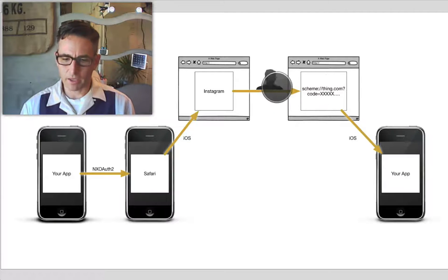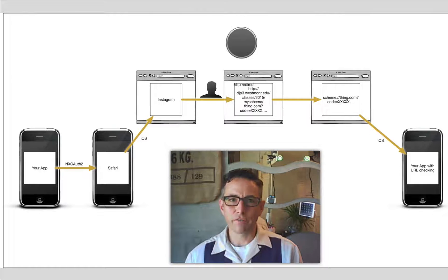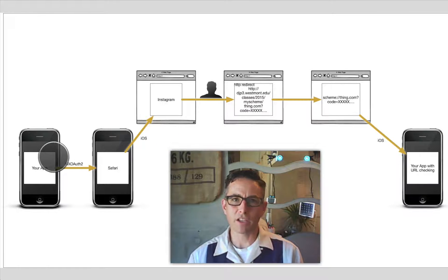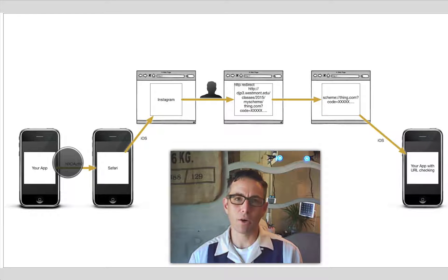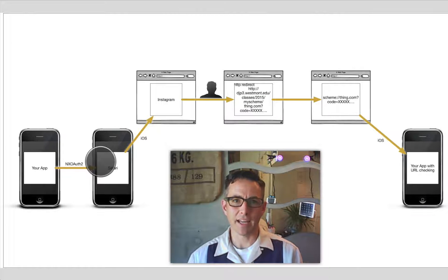Here's what we're going to do — we're going to change the flow a little bit. The first part looks basically the same: your app, through the initiation of a user hitting a login button, is going to use NXOAuth2 to open a URL in Safari that starts with HTTP. So far this is the same; we're getting those URLs from registering a client.